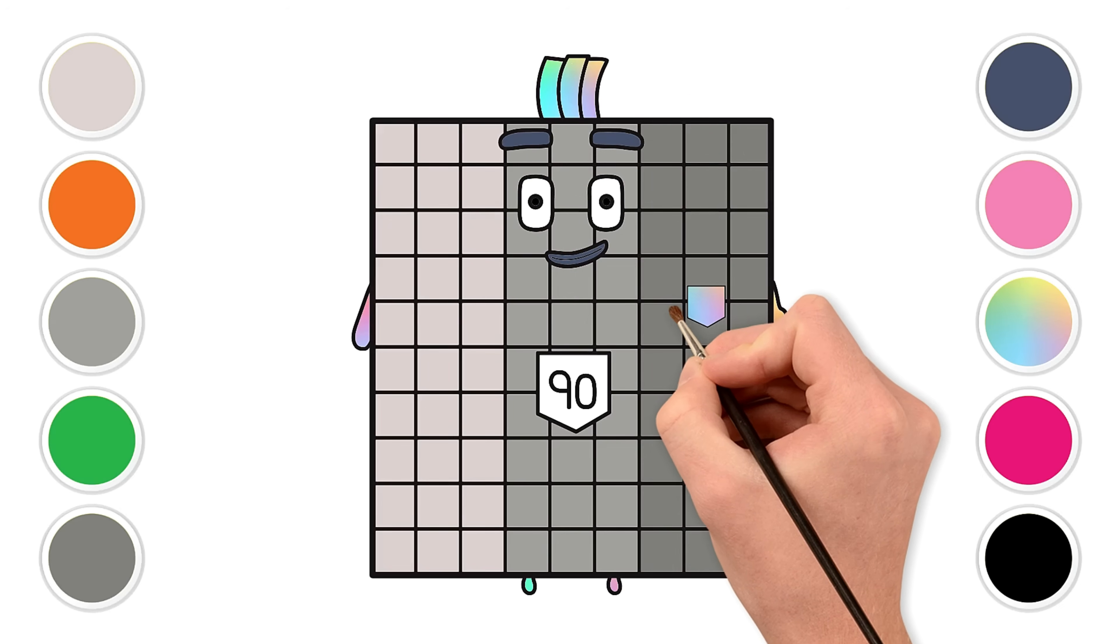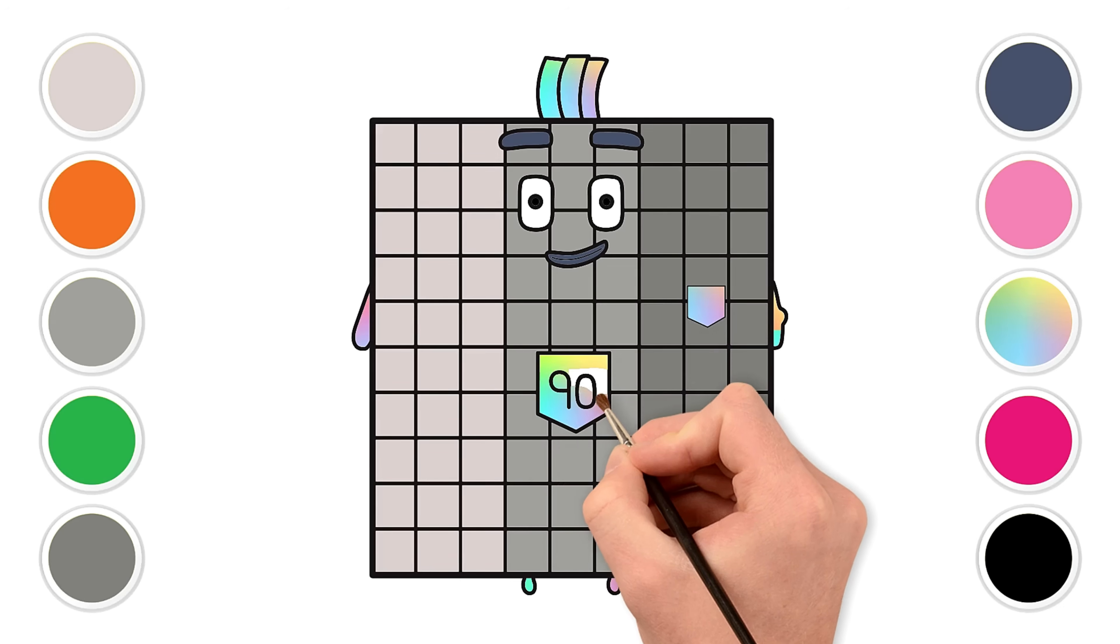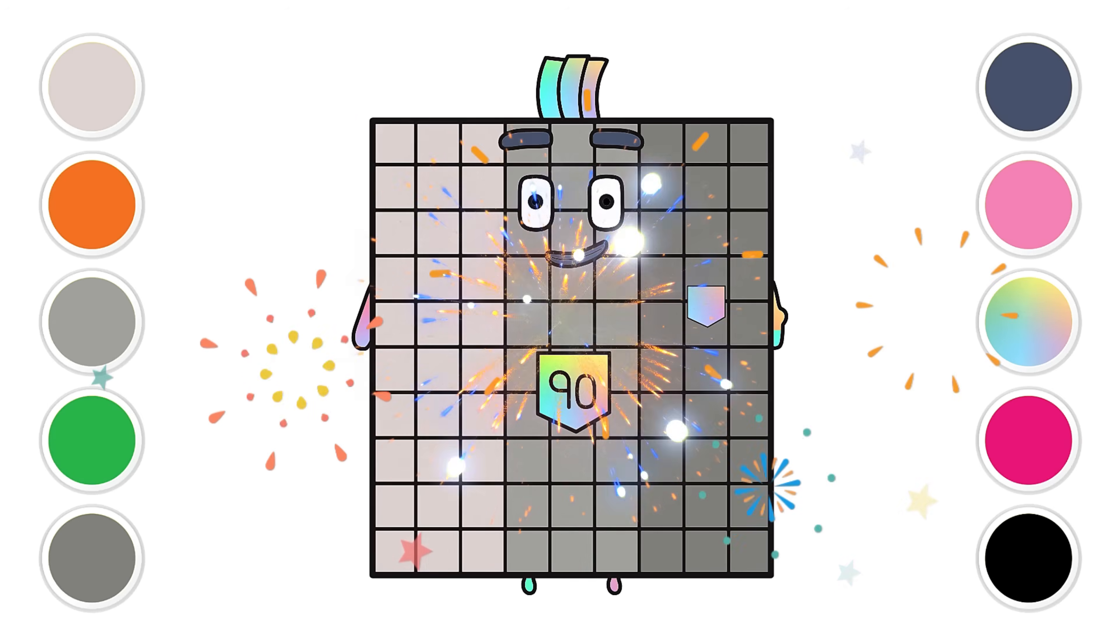Finally, color the number badge on his tummy and the little pocket with the same rainbow effect. You just drew and colored all 90 blocks. Great job! Great work, everyone!